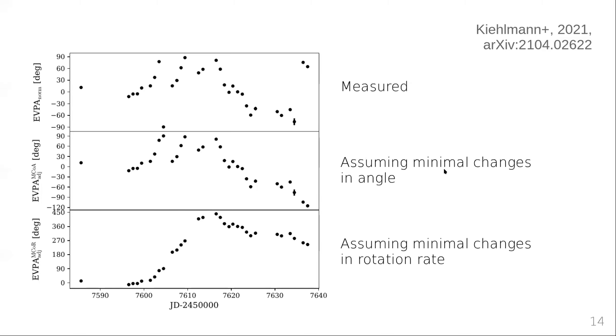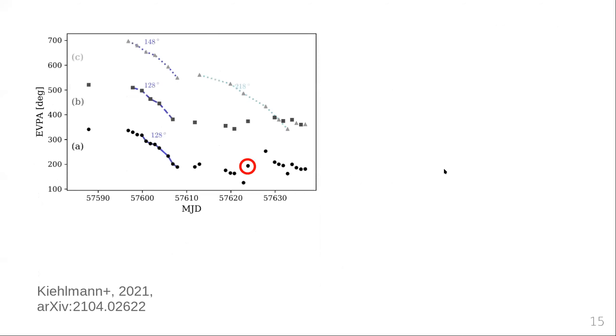So time sampling is critical in dealing with EVPA measurements. Here's another example, again from our RoboPol data. This is one of our best sampled EVPA curves in the RoboPol sample. Down here, I'm showing the original data. Here, we identified a rotation period.